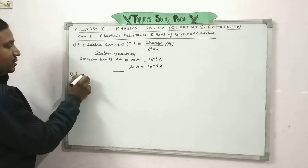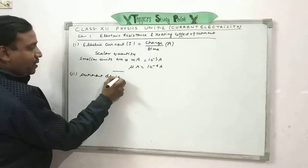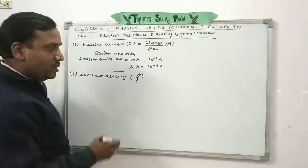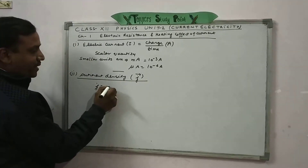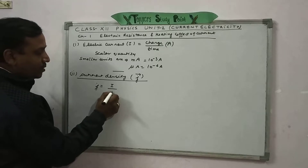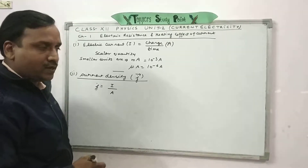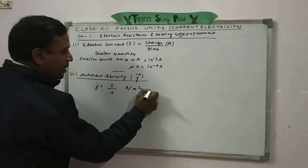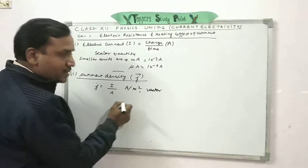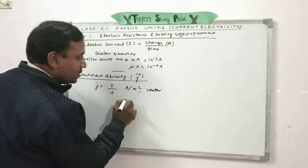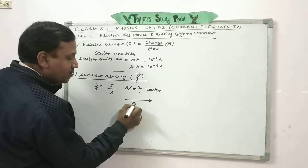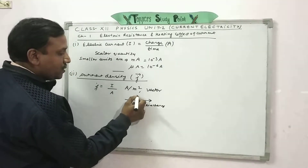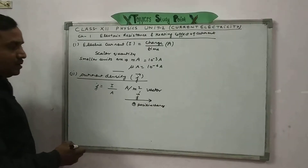Formula 2: Current density, represented by small j as a vector. Current density is defined as the current passing through unit cross-sectional area of the conductor, perpendicular to its length. Its unit is ampere per meter square. It is a vector quantity and it is in the direction of motion of positive charge. The current density vector points in the same direction as the motion of positive charge.